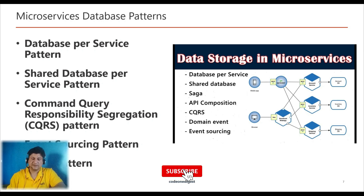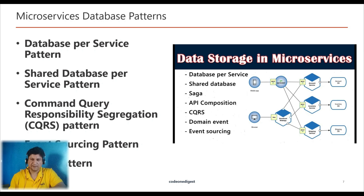Third is Command Query Responsibility Segregation, also called the CQRS pattern. This pattern suggests splitting the application into two parts: a command side and a query side database. The database is split into two — one for write operations and one for read operations only.